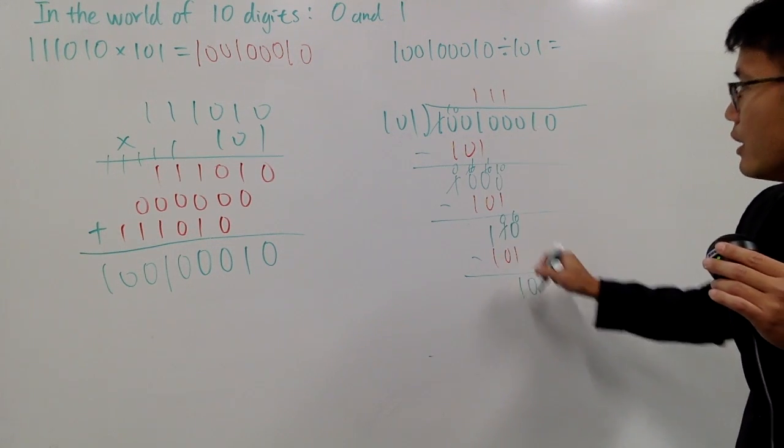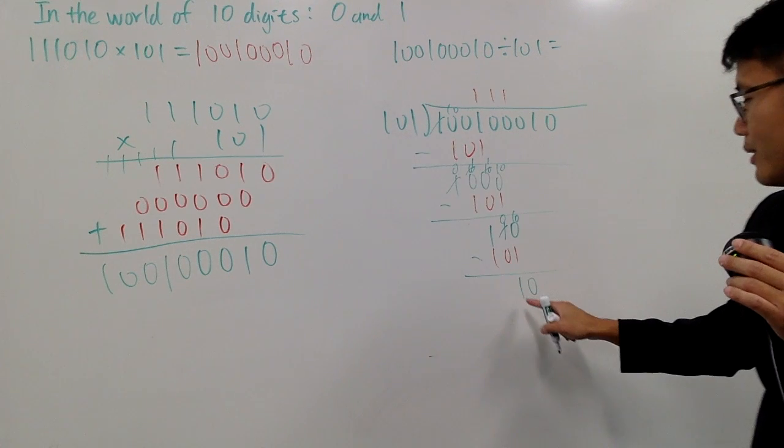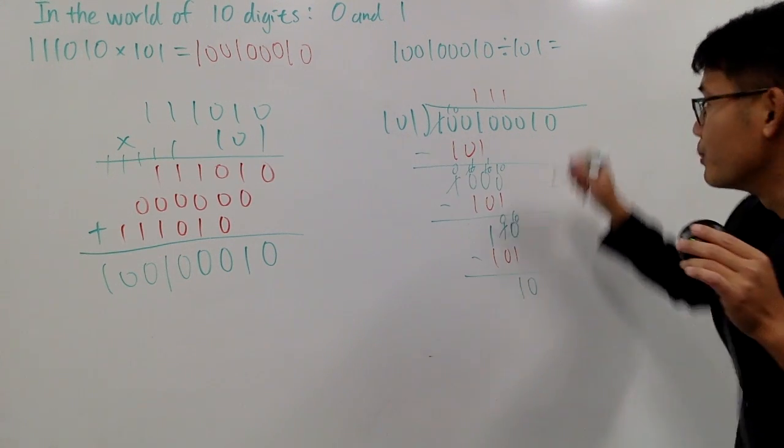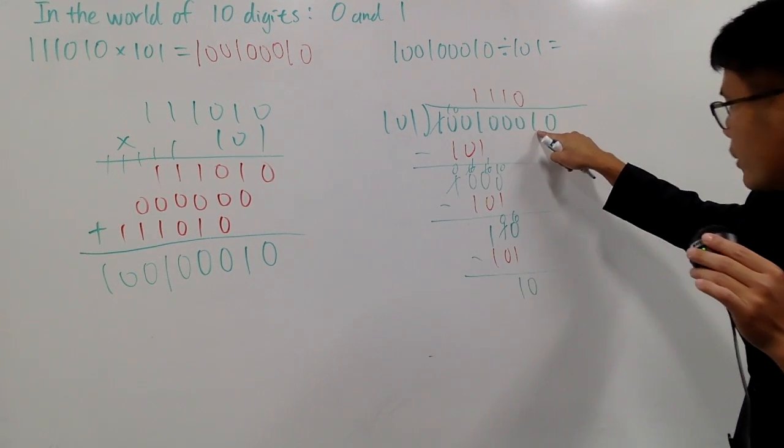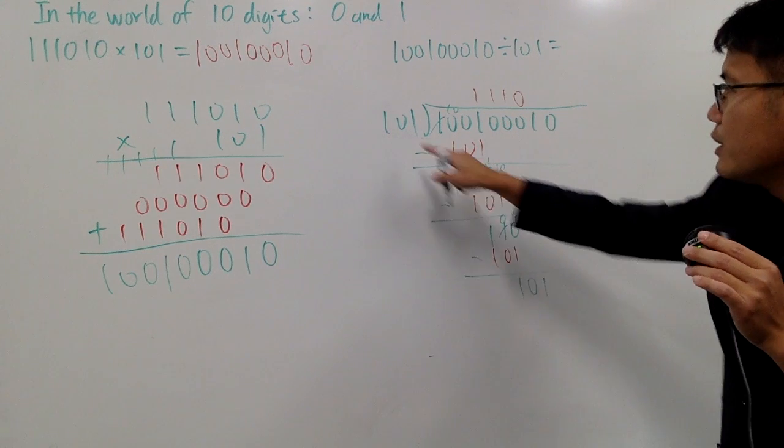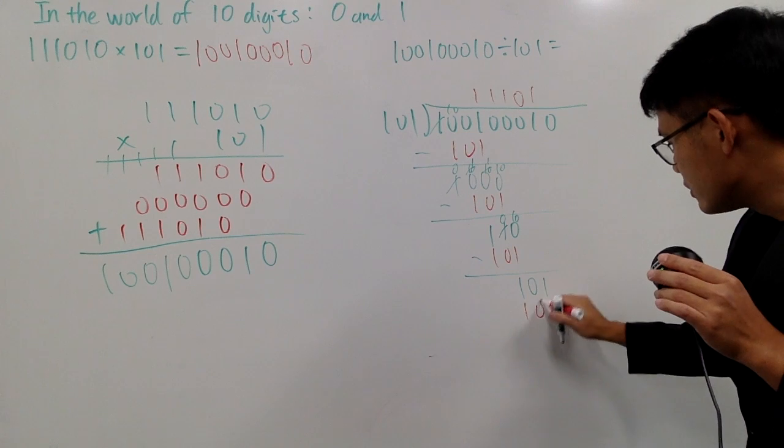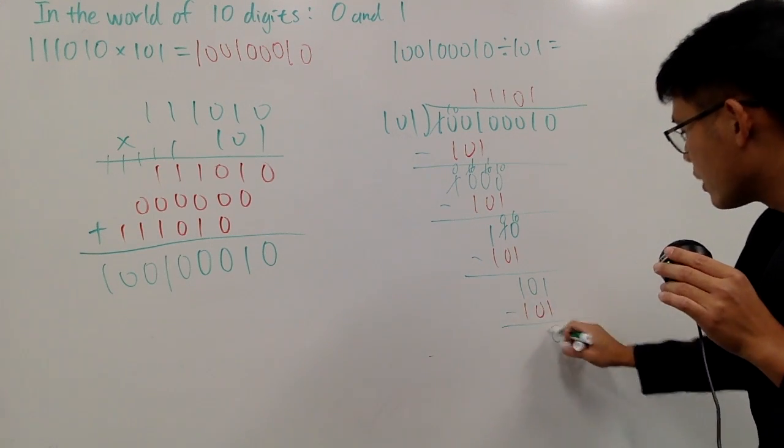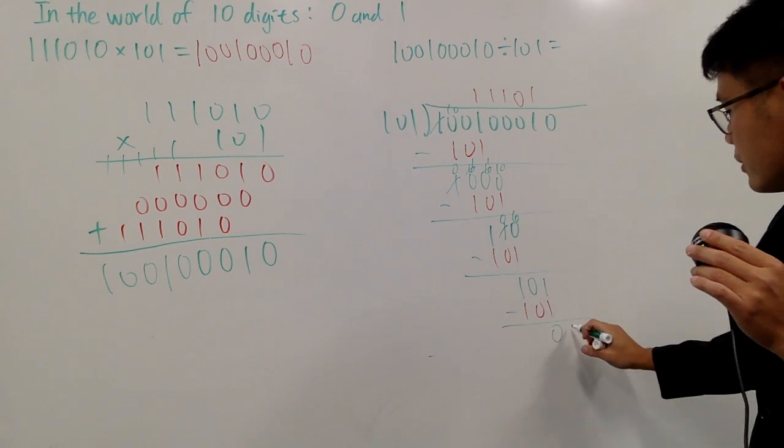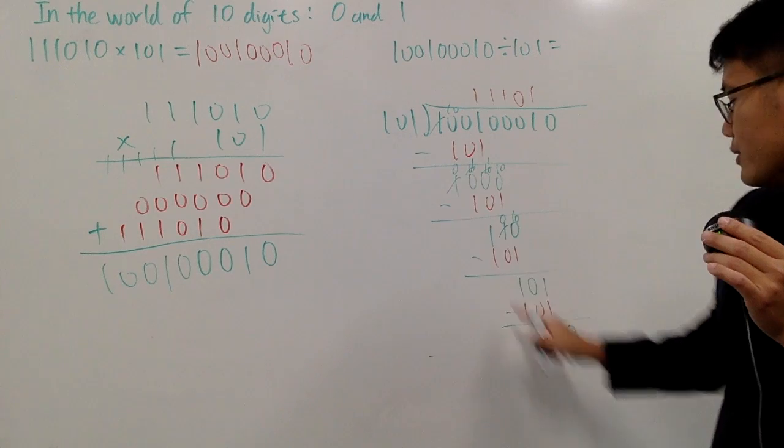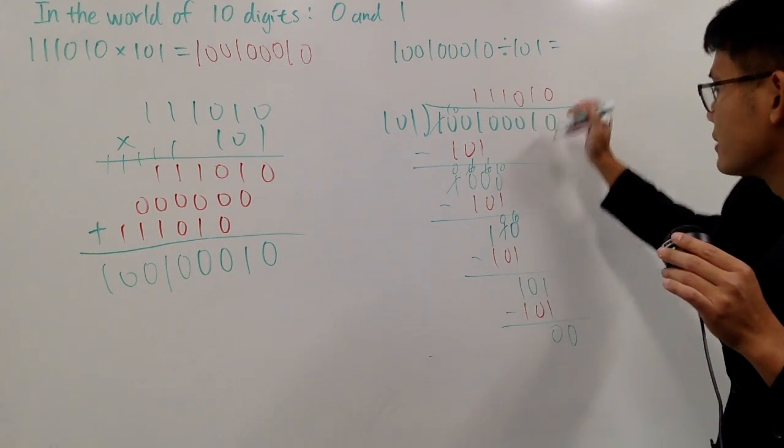Now, bring down this 0. Okay. 1, 0, 1 doesn't go into 1, 0. So you put down a 0 right here. And then, you can bring down this 1 right here. And you see, 1, 0, 1 goes into 1, 0, 1 exactly 1 time. So 1 times that is exactly 1, 0, 1. And you subtract. You get 0. And you bring down this 0. You see, 1, 0, 1 goes into 0, 0. Of course, 0 times. So in fact, you are done.